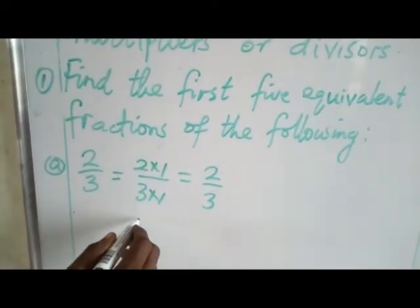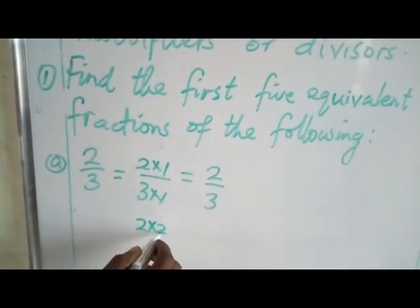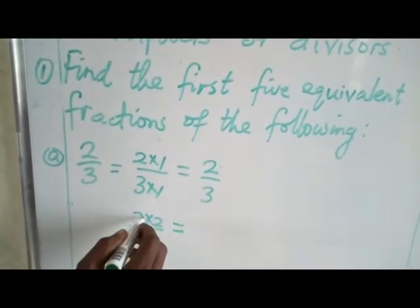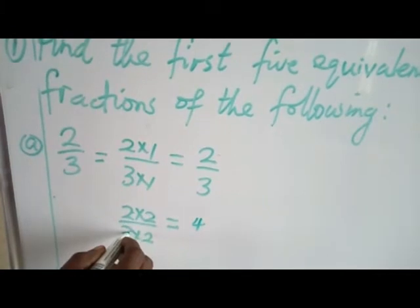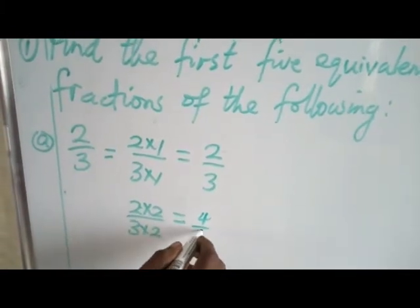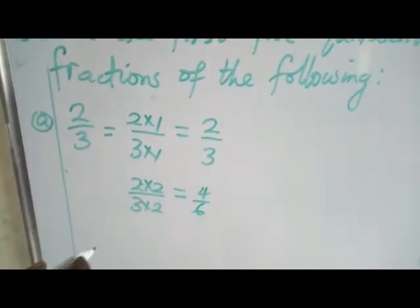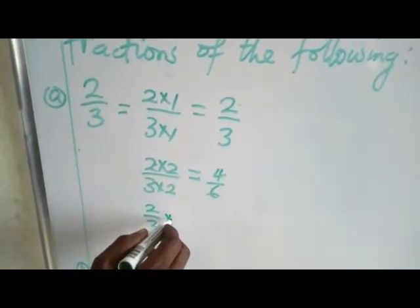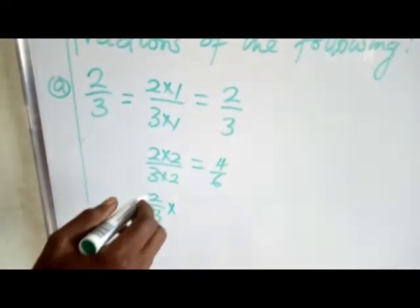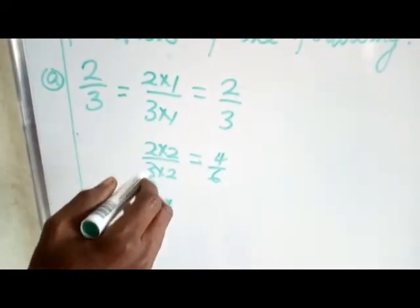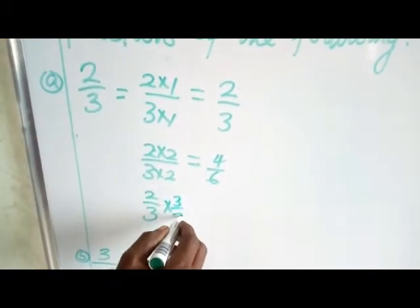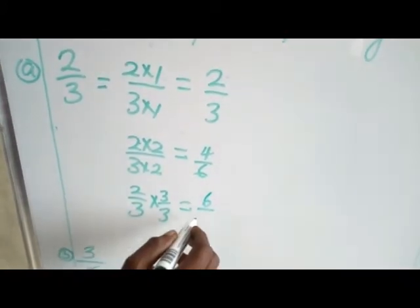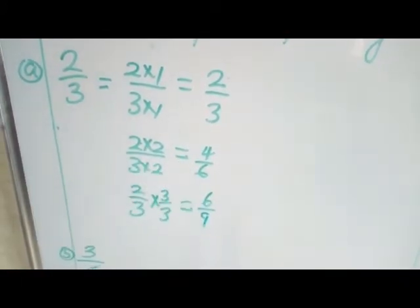Then the second one, you use the same method. 2 multiplied by 2, multiply the denominator also by 2. So we have 2 times 2 is 4, 3 times 2 is 6. This is the second equivalent fraction. For the next one, remember you multiplied the first one by 1, the second one by 2, and the third one you multiply by 3. So we have 2 times 3 is 6 divided by 3 times 3 which is 9. This is the third equivalent fraction.